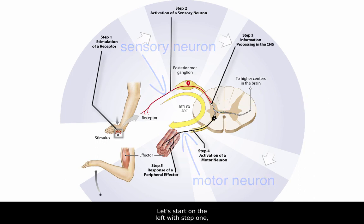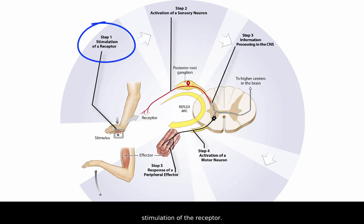Let's start on the left with step 1, stimulation of a receptor. Here the stimulus is that you touch a sharp tack which stimulates pain receptors in your hand.